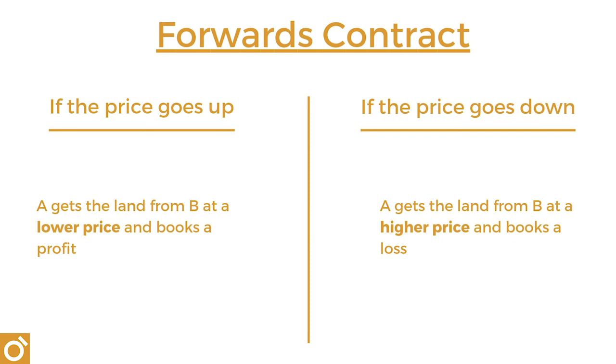On the other hand, if the price doesn't move or actually ends up falling, A makes a loss while B gets a higher price for his land. Forward contracts, however, do come with certain inherent risks. Firstly, they are contracts entered into by two private entities without a third-party regulator to ensure that the contract terms are honored — resulting in default risks as well as regulatory risks. Secondly, these contracts are customized and unique, hence making them hard to trade, which results in liquidity risks.